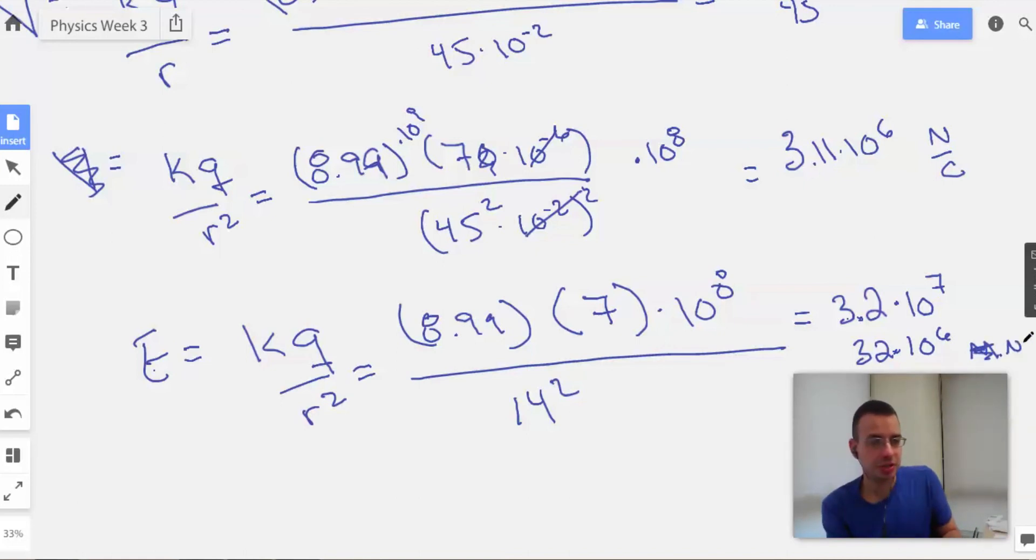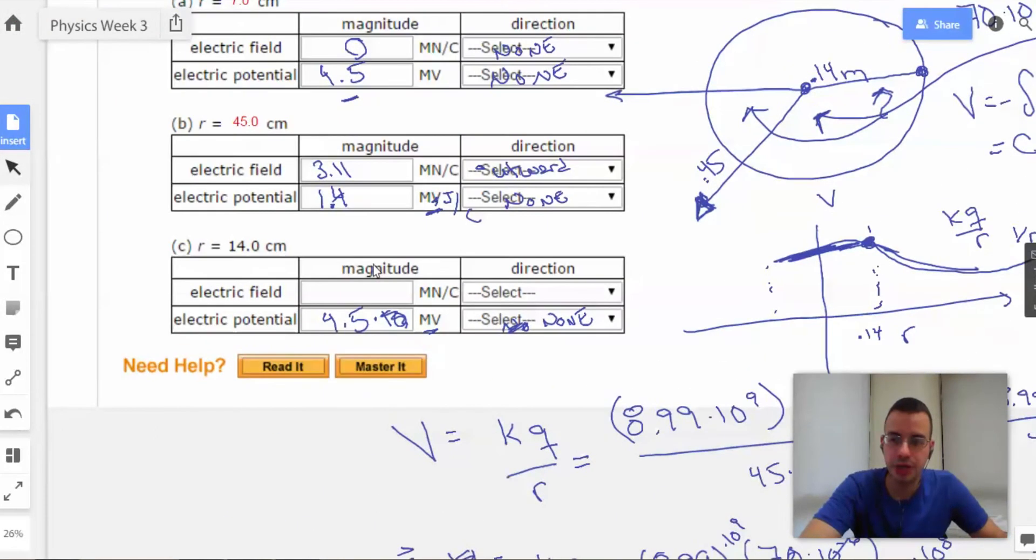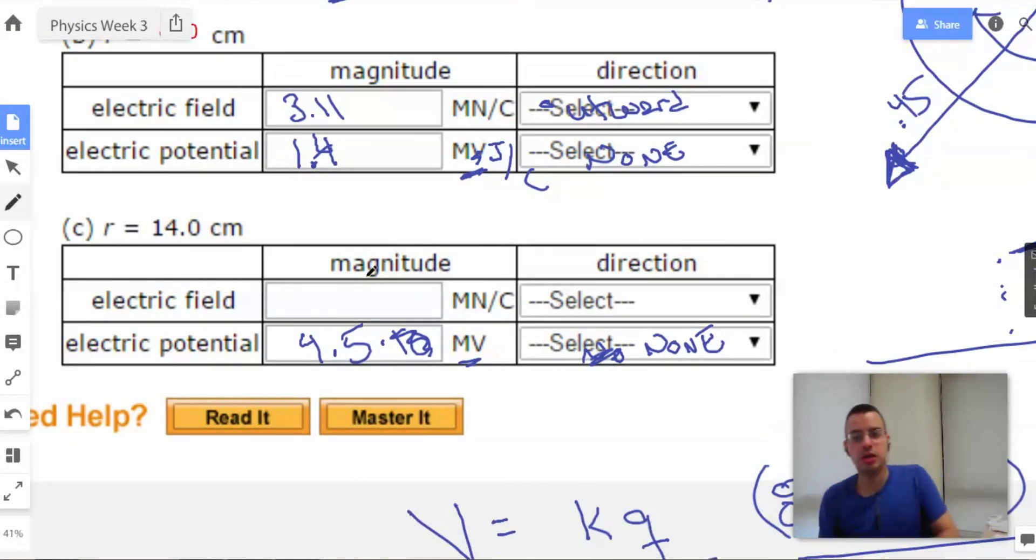I was going to say newtons per coulomb. So it's going to be one of two answers here. Either this is going to be 3.2 or it's going to count the very edge of the conductor as part of the conductor and therefore 0. But I'm going to guess they want 3.2 times 10 to the 6th, which is meganewtons per coulomb.